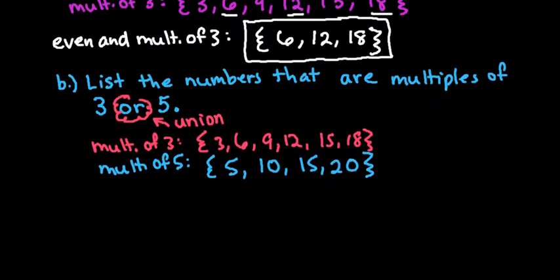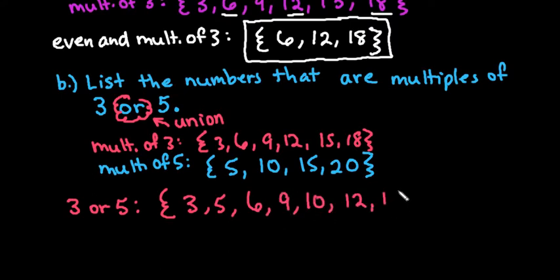When you have 3 or 5, we're looking for the set of numbers 3 or 5, we're going to put everything that occurs in each of them. So I would have the 3, 5, 6, 9, 10, 12, 15, 18, and 20. So the set of numbers 3, 5, 6, 9, 10, 12, 15, 18, and 20 would be the union of the multiples of 3 or multiples of 5.